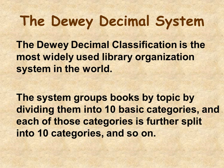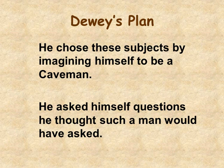All books are grouped by topic. There are ten basic categories, and each of those categories is subdivided into ten more categories, and so on. How did Dewey decide on the ten categories? Easy! He imagined that he was a caveman and asked himself the kind of questions he thought a caveman would have asked.